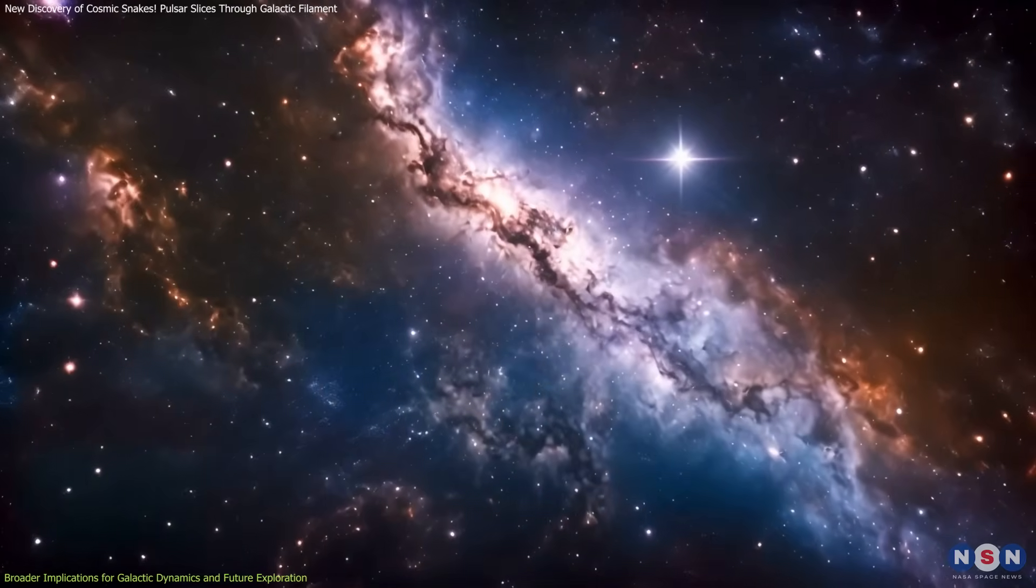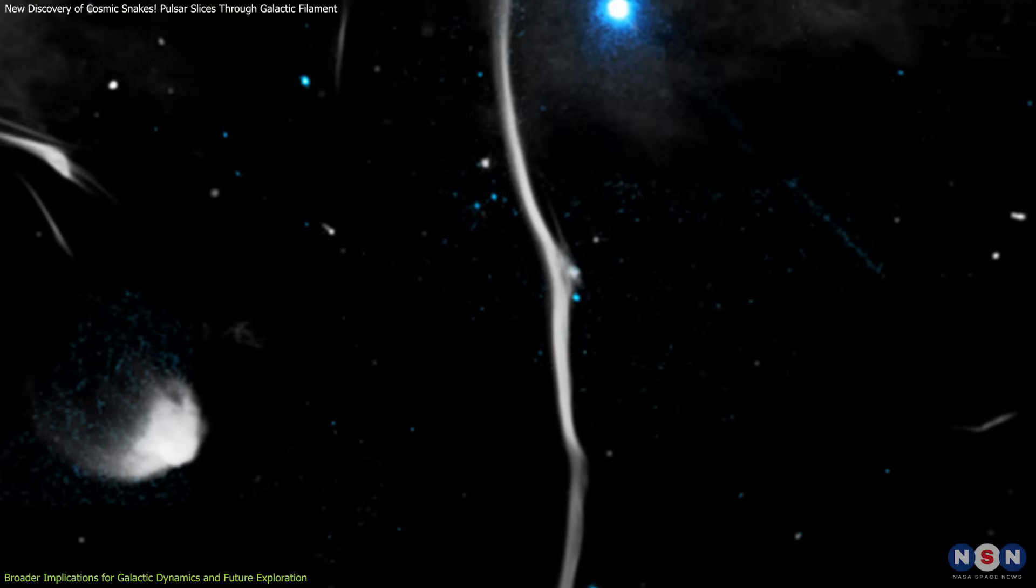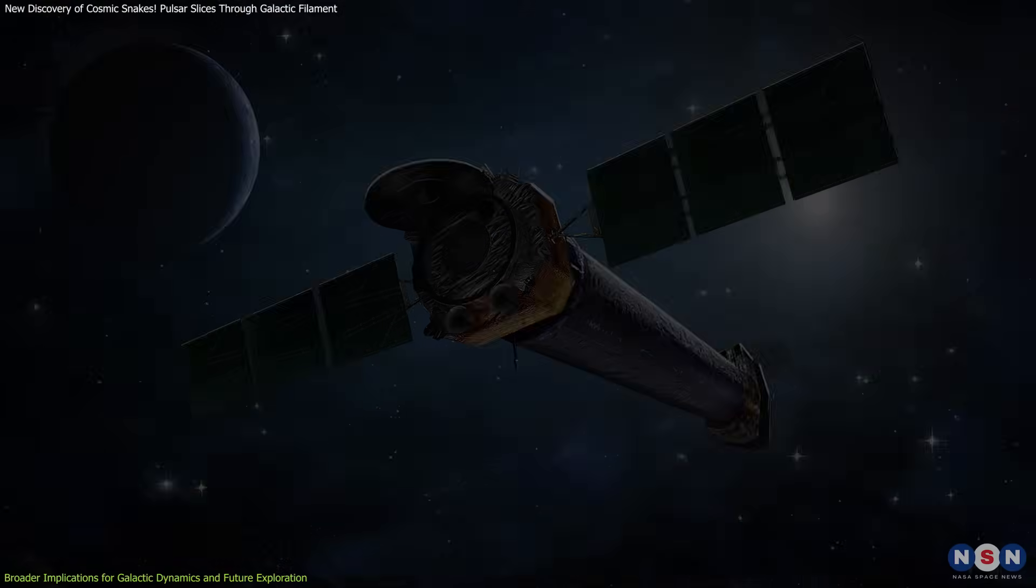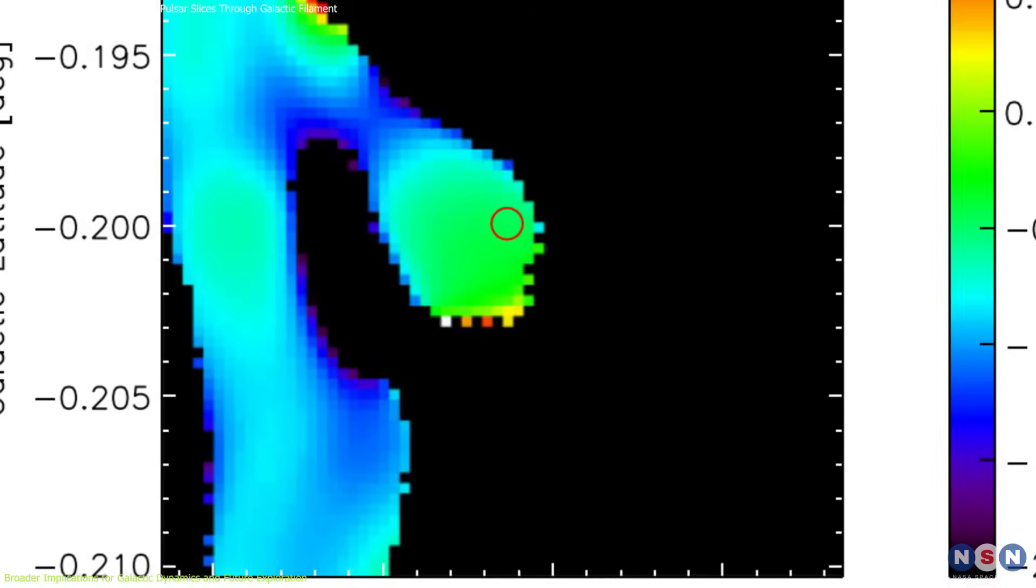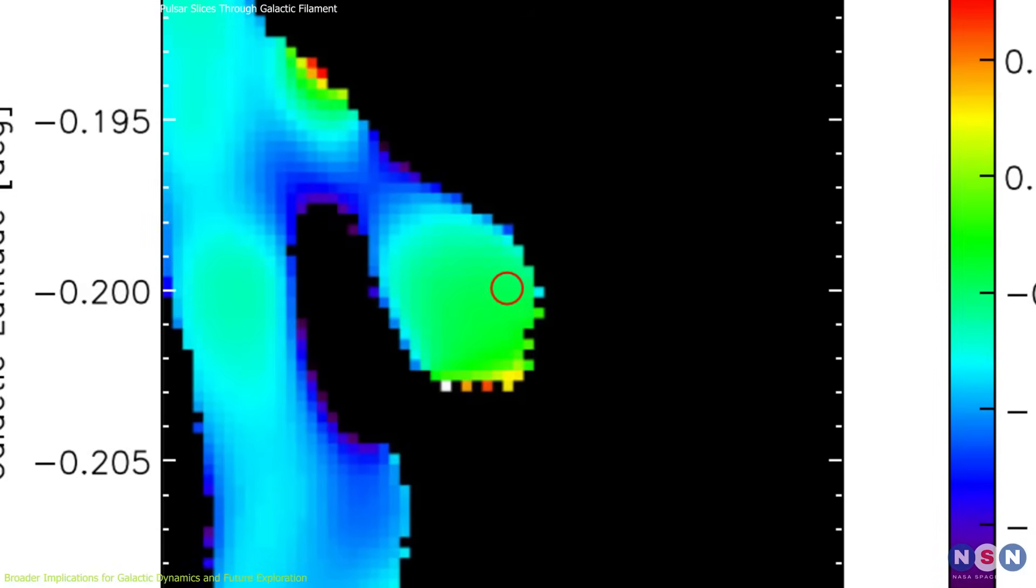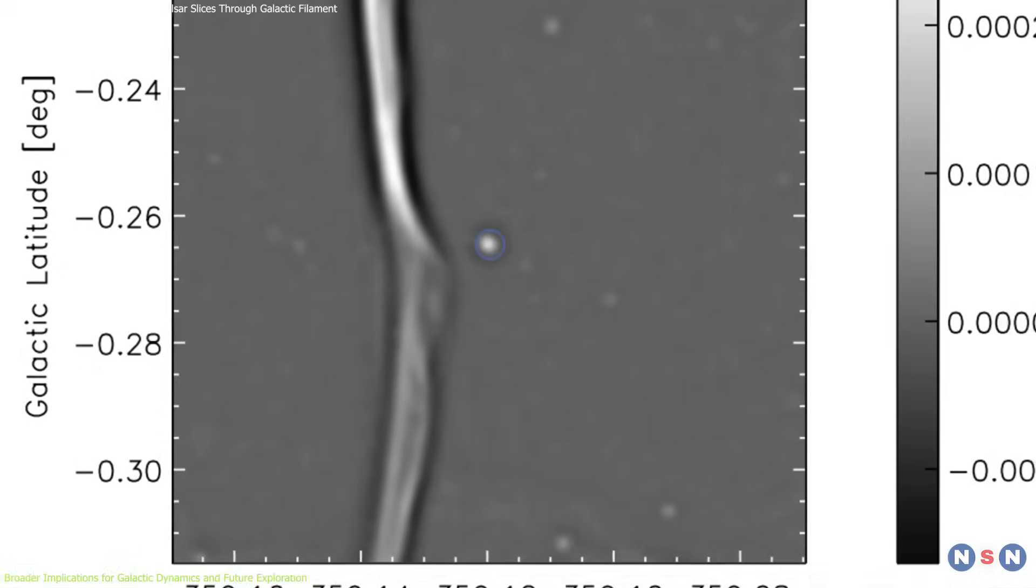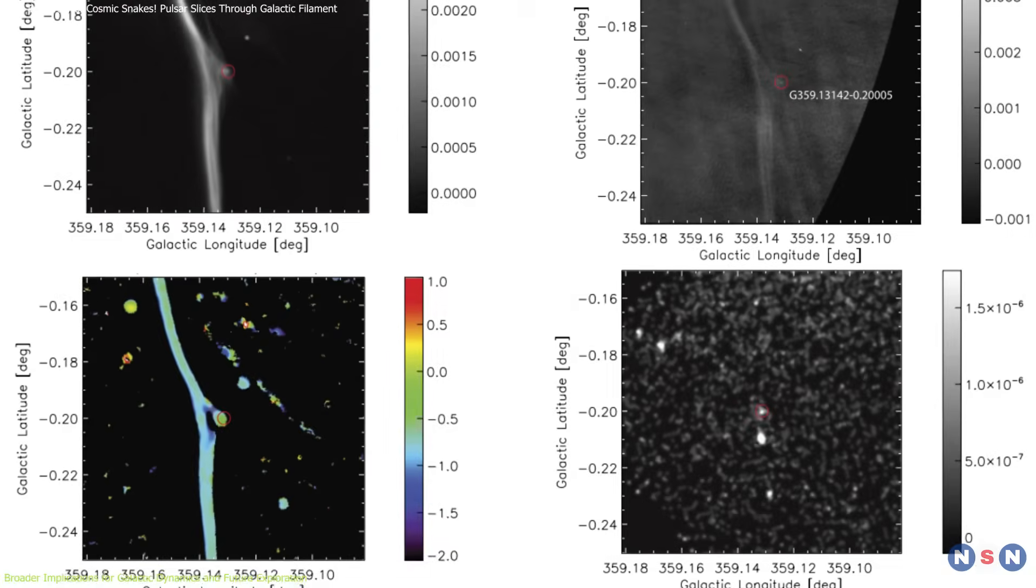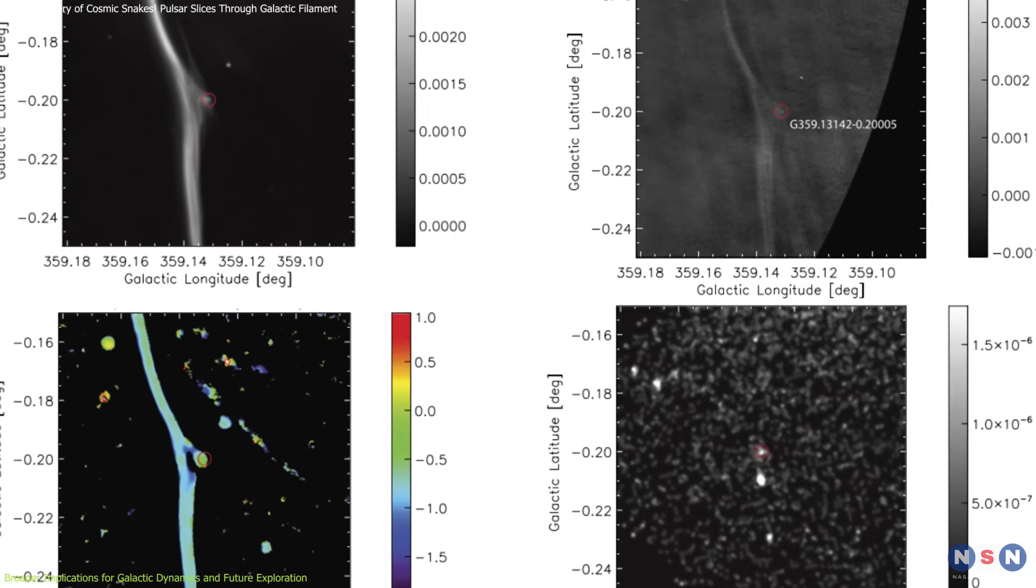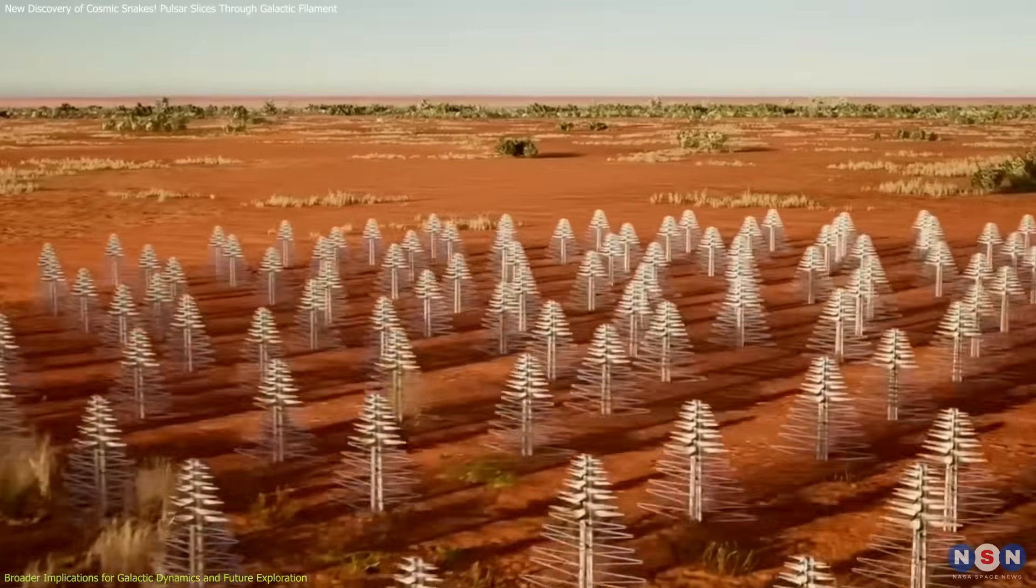The tools used to uncover this event were vital. NASA's Chandra X-ray Observatory captured the high-energy X-rays from the pulsar and its surroundings, while Meerkat's radio arrays mapped the structure of the filament with stunning precision. Together, they formed a multi-wavelength bridge between high-energy physics and galactic anatomy.